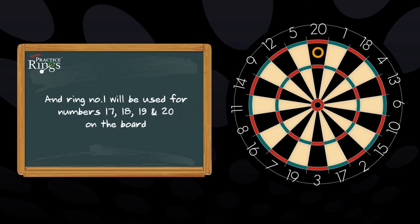And ring number one will be used for numbers seventeen, eighteen, nineteen, and twenty on the board.